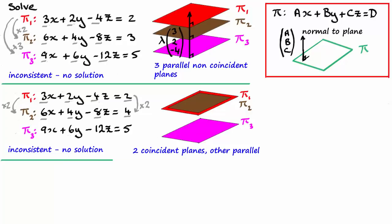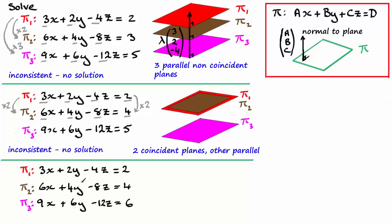You might have guessed the third scenario when it comes to parallel planes. And that is when you're asked to solve this set of linear equations. You'll notice I've copied down pi one and pi two again, where I have doubled each of the values of a, b and c to give me six, four minus eight. And also when I double the two here, I get the four. So we've already seen that when it comes to pi one and pi two, they're basically the same plane.